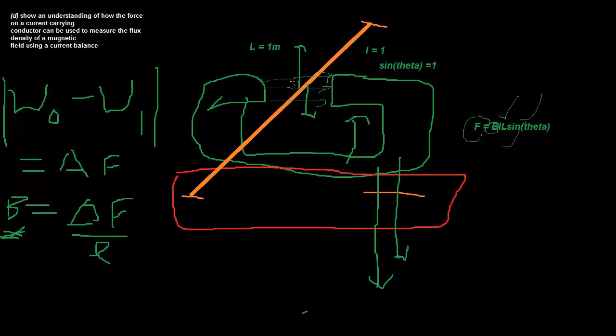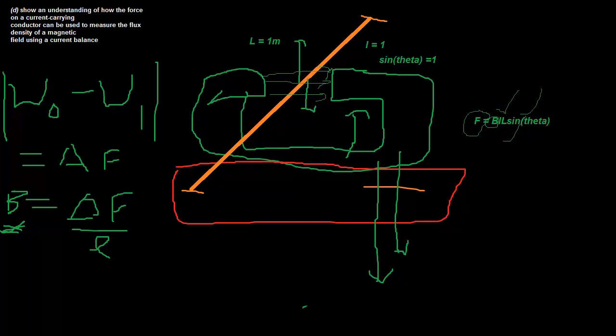So that is basically an explanation of how magnetic flux density is determined. Sorry this video ran a little bit long, but that is an explanation of Topic 22.1, which is forces acting on a current-carrying conductor. This is the longest part of this chapter, so the next videos will be shorter. But thanks for listening, and if you like what you heard, please subscribe.